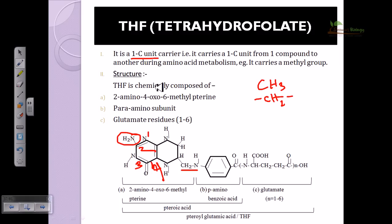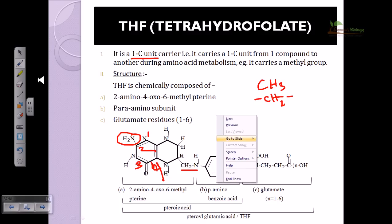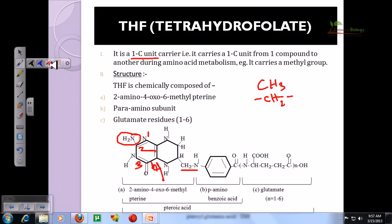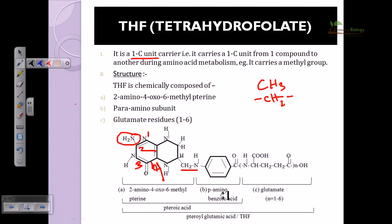The structure of tetrahydrofolate consists of three parts: the first part is 2-amino-4-oxo-6-methylpteridine; the second part is p-aminobenzoic acid, where an amino group is added to the para position; and the third part is glutamate, or simply glutamic acid.